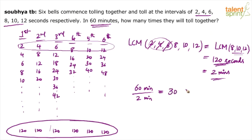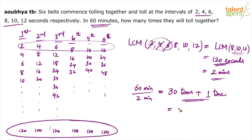But the correct answer is 30 plus 1. This is the tricky part — this is where many of us go wrong. We come so close to the answer of 30, but we lose that one mark because of one simple mistake. It is not 30 times — the final answer is 31 times.